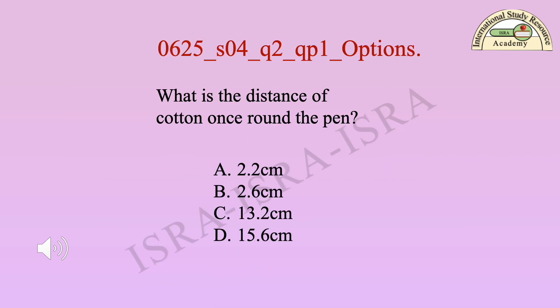Now look at the options for the distance of cotton once round the pen. Option A: 2.2 cm. Option B: 2.6 cm. Option C: 13.2 cm. And Option D is equal to 15.6 cm.